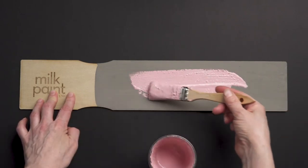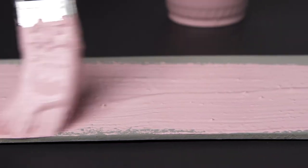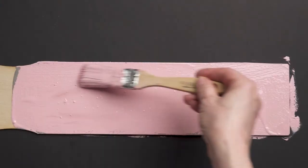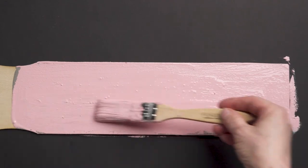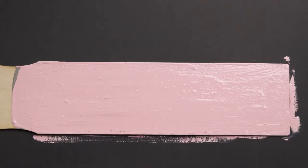Mix your milk paint thicker than usual and apply liberally to your surface. Using contrasting colors will result in a more noticeable crackled effect. Here our base coat is Gotham gray and our top coat is Palm Springs pink.